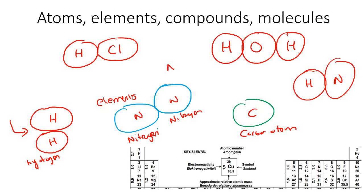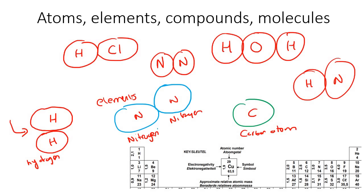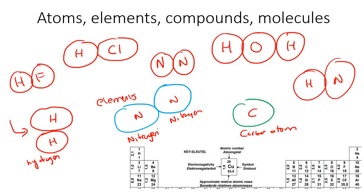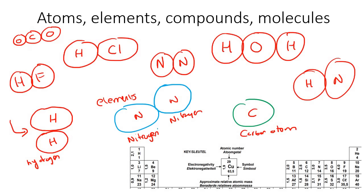Is a single atom a molecule? No, because it has to have two or more. What about N and another N — is that a molecule? Yes, because it must have two or more. What about H and F? Yes, because two or more. And then oxygen with a carbon and another oxygen — is that a molecule? Yes, because it's two or more. So molecules must just have two or more atoms bonded together.